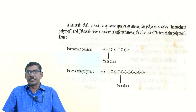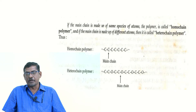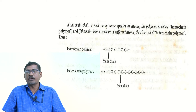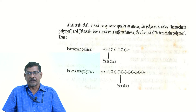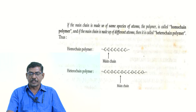The next classification is based on the atoms present in the main chain. If only one type of atom is present in the main chain, it is called a homo chain polymer — for example, polyethylene, polystyrene, and polyvinyl chloride all contain only carbon in the main chain. If the main chain contains a minimum of two types of atoms, such as carbon-carbon-oxygen repeating, it is called a hetero chain polymer.